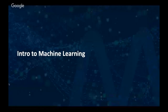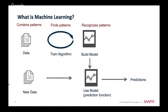A brief introduction to machine learning and clustering: machine learning uses algorithms to find patterns in data, then uses a model that recognizes those patterns to make predictions on new data.